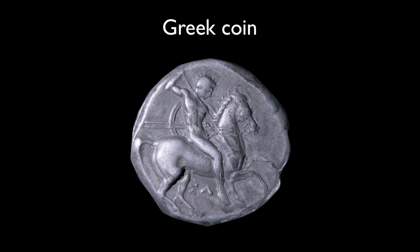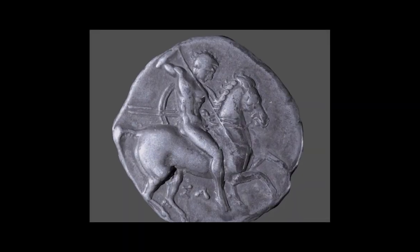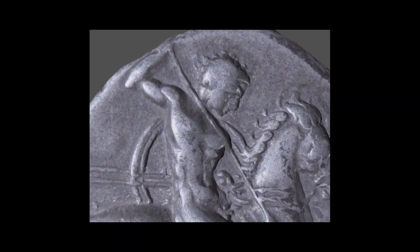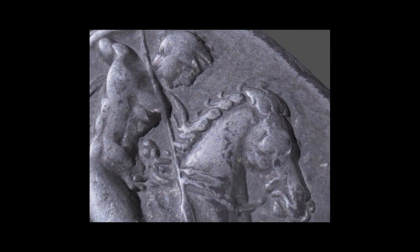With the bench configuration, we can also capture a color image of the object and use this image as a texture on the model. Here is a model of the Greek coin with both color and geometry.